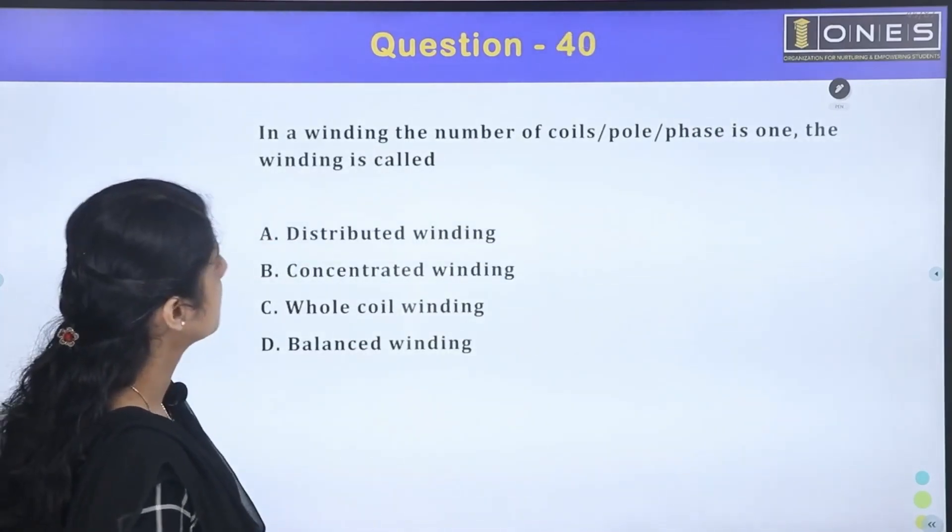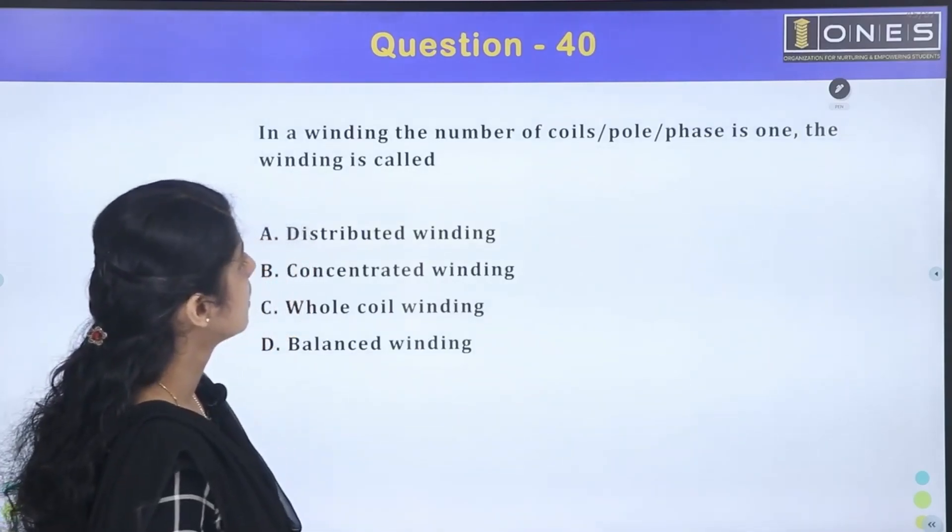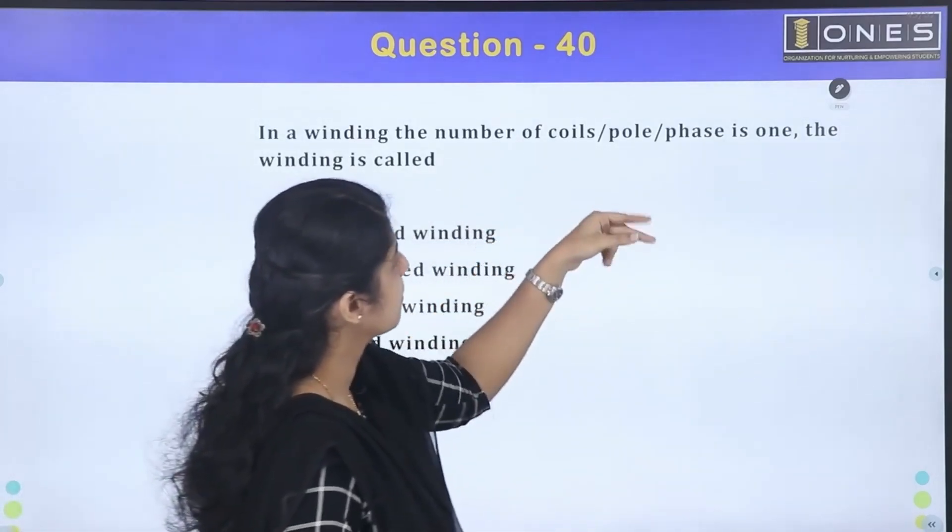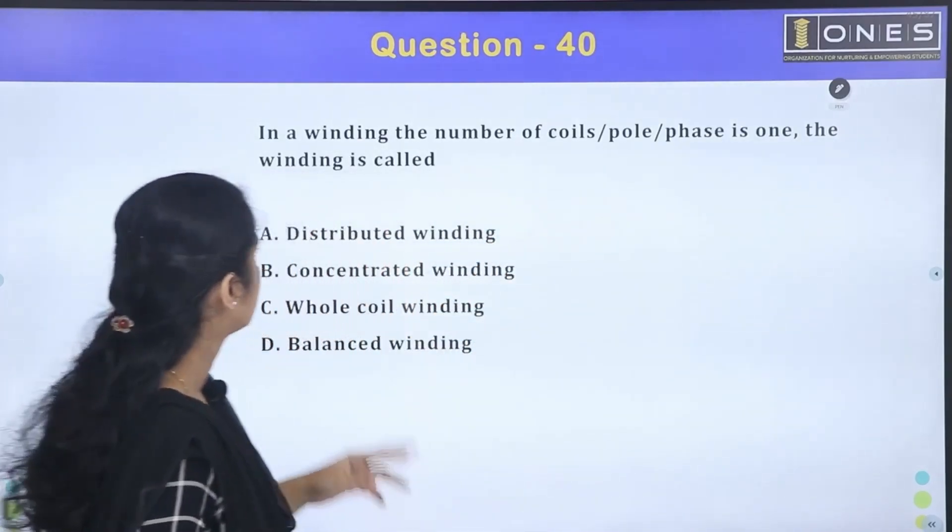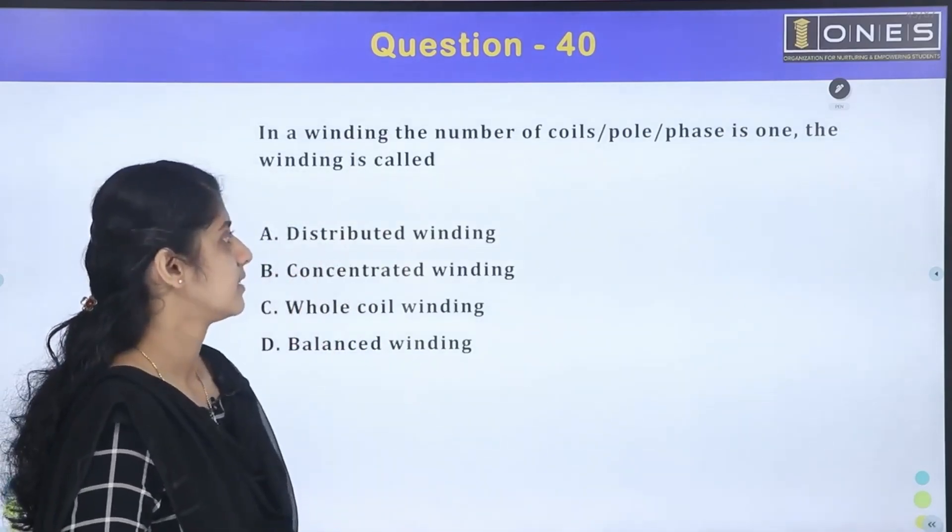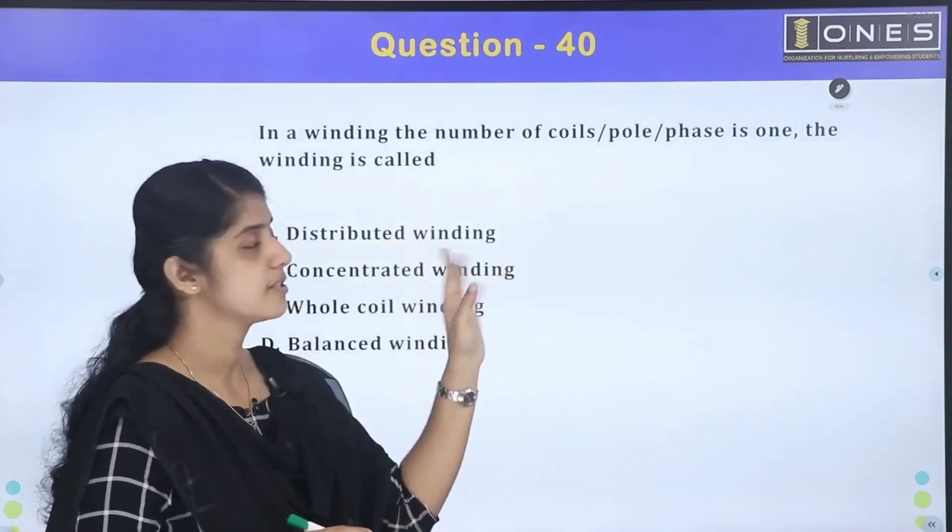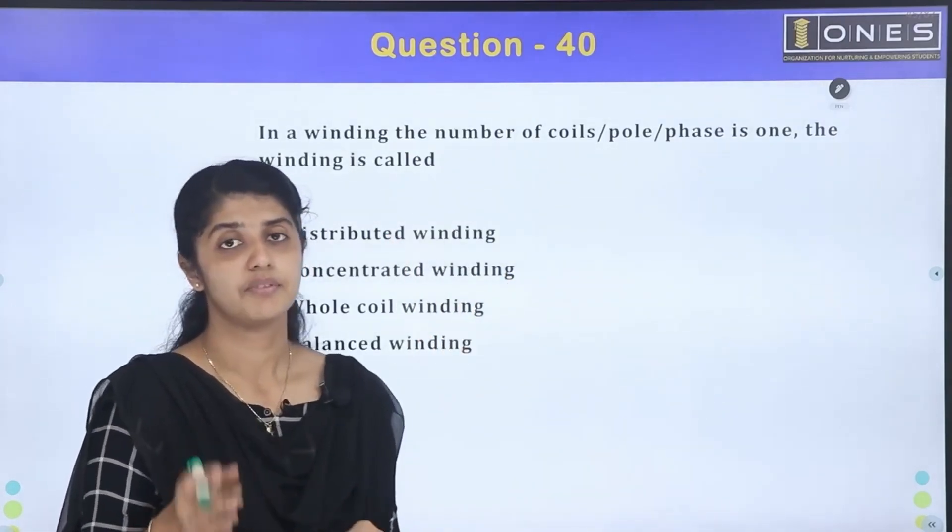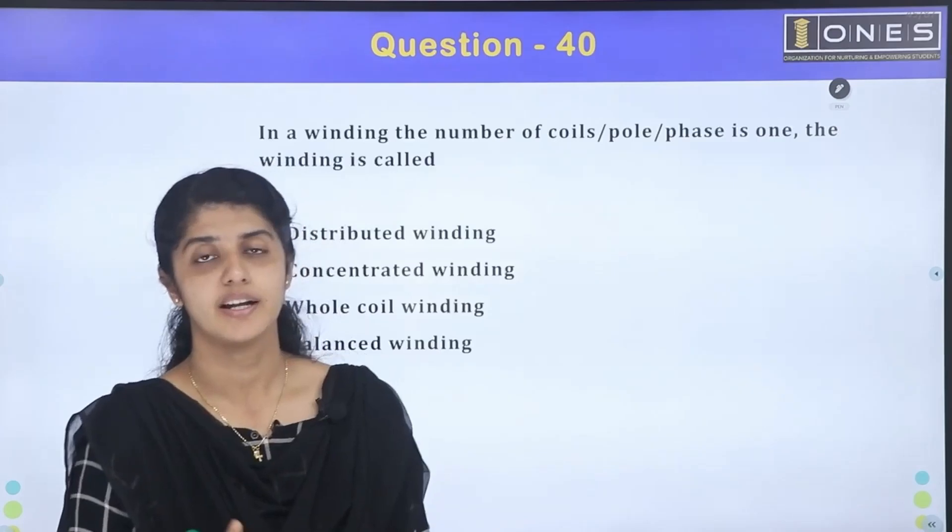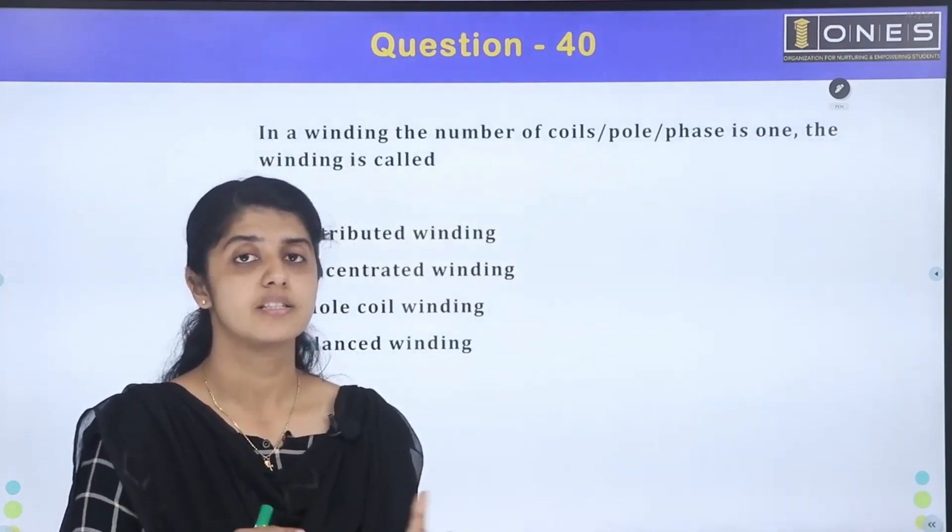The next one: in a winding, the number of coils per pole per phase is one. The winding is called - coils per poles per phase. This is a three-phase machine. This is a concentrated winding or distributed winding.